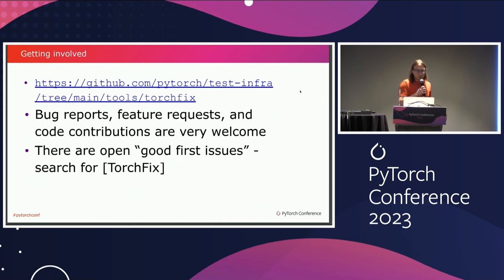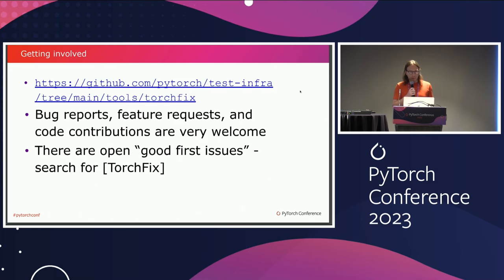To get involved, first try running TorchFix on your codebase and see if it finds any issues, or if you find issues with TorchFix itself. After that, you can go to the GitHub page and report a bug, request a feature, or make a code contribution — all very welcome. If you want to contribute code but don't know where to start, we already have a couple of good first issues open.